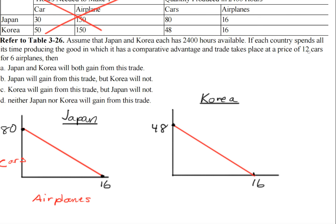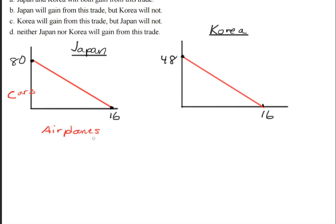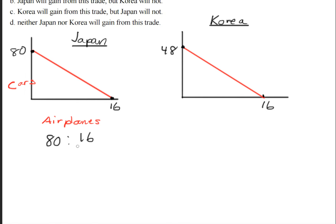So now they're going to trade, but who's going to trade which commodity? To find that out we have to determine comparative advantages, and we start by creating a ratio between the production possibility frontier curves. So here we have 80 cars to 16 airplanes and we're going to compare the airplanes — we divide by 80, which gives us 1, and 0.2 for the airplanes side.